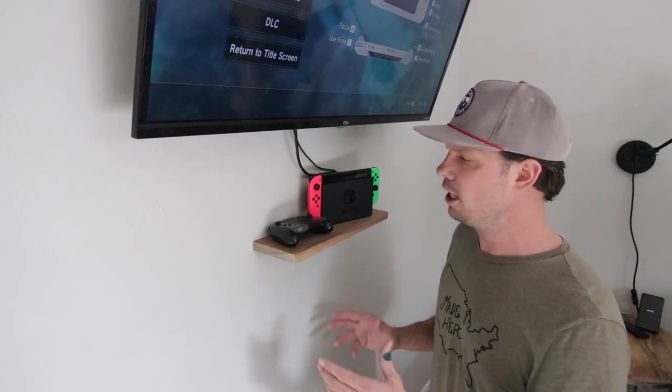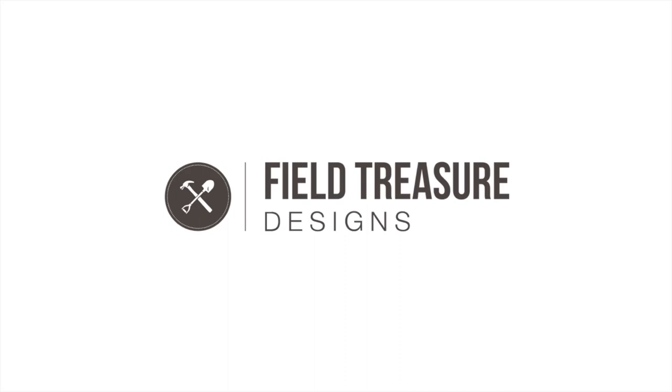I used this awesome piece of walnut that I've had laying around for years and something called a keyhole routing bit to make it. It didn't take long at all. I'd love to show you exactly how I did it, so check it out on this episode of Field Treasure Designs. We're gonna take this little open space on the wall and make a floating shelf.